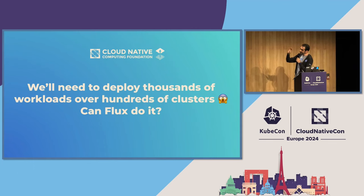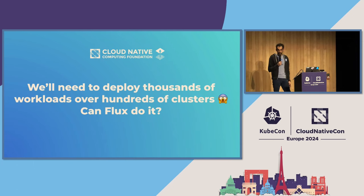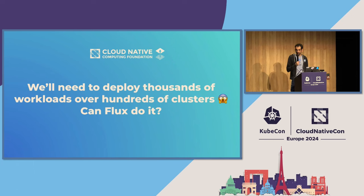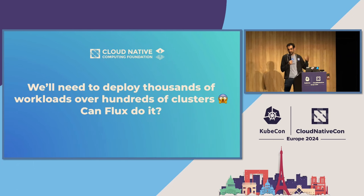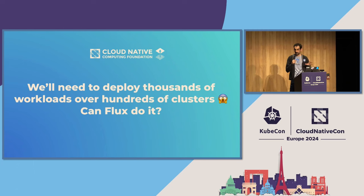I'm getting more and more messages on Slack from users who started with a couple of things and suddenly realize that next year they're going to deploy thousands of workloads and hundreds of clusters. You'll probably start with Flux as a monorepo — use the example repo, and that's fine, it works. But not at huge scale. You need to rethink your setup. Flux can actually do well with a monorepo with thousands of apps and hundreds of clusters — it's more about your cognitive load. Flux can do it no matter how you organize things.